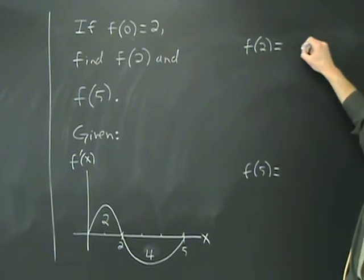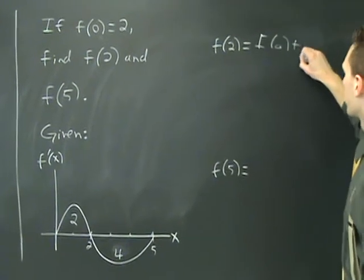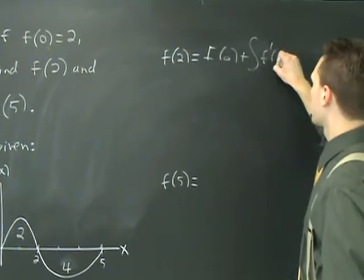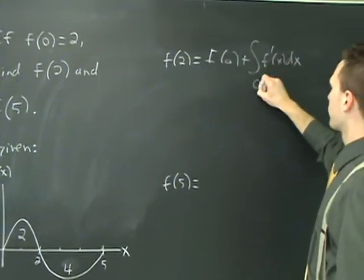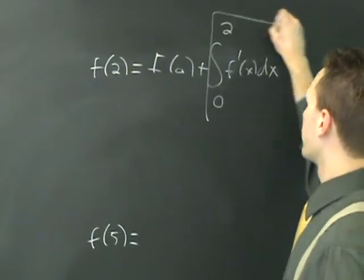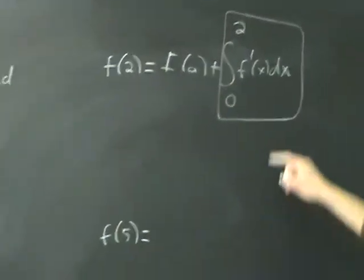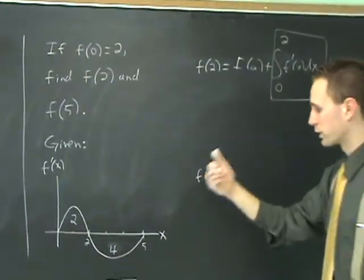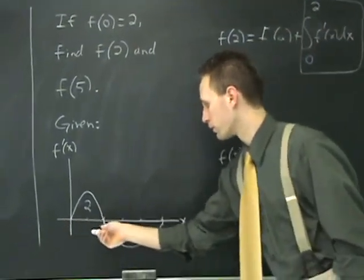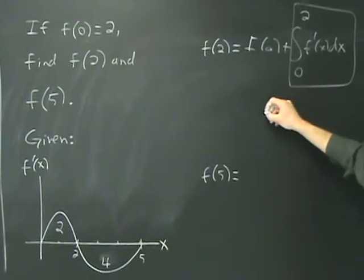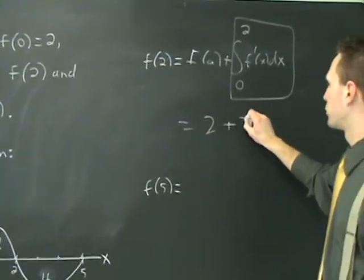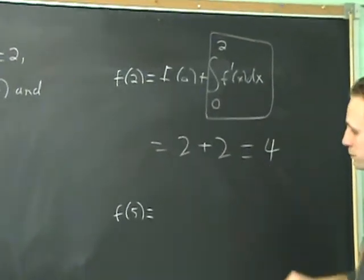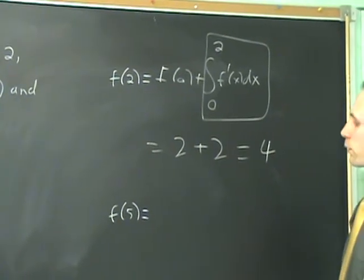F of 2 is going to equal f of 0 plus the integral of f prime from 0 to 2. You get this by reading it right off of the chart. The integral from 0 to 2 is the area, that's going to be 2, which says that f undergoes a total change of 2 from here to here, and so the final value is going to be 2 plus 2 is 4.